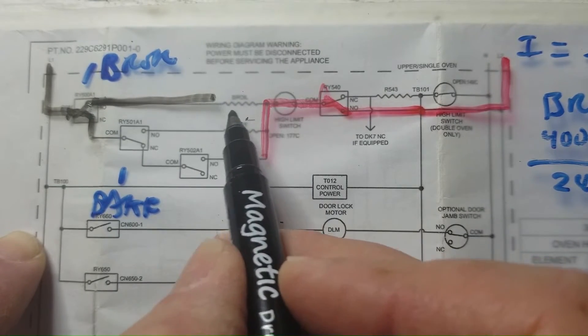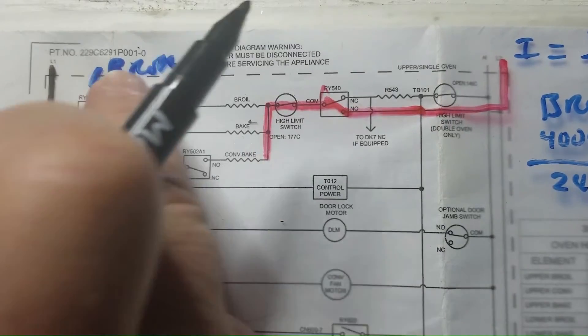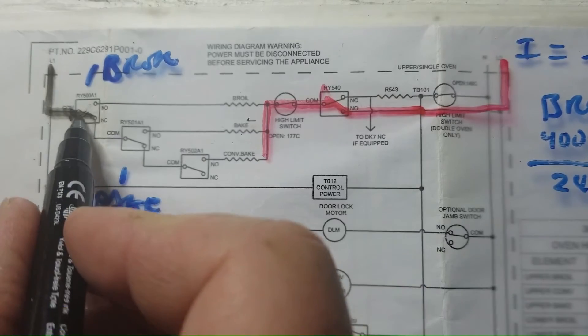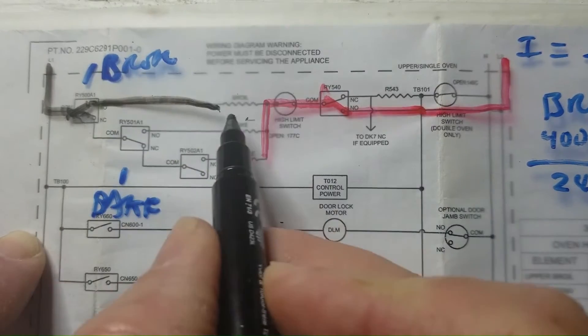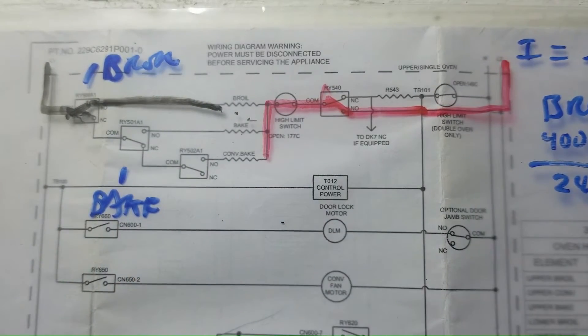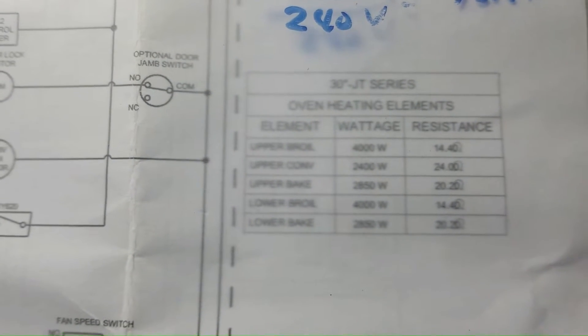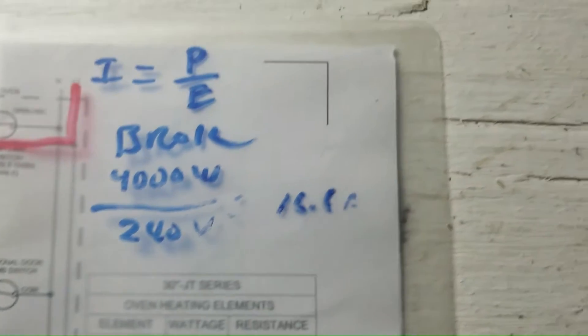So it uses that stored heat in conjunction with this broil element to more quickly heat up the oven. This broil element augments the preheating process. What happens though is that this relay right here gets stuck, and the reason it gets stuck is because broil uses a lot more current than the other elements do. This is your wattage table right here, and the broil element is only 14.4 ohms.